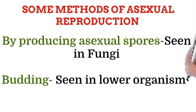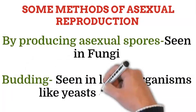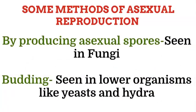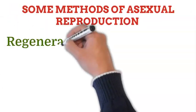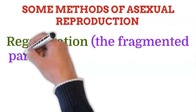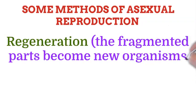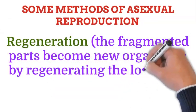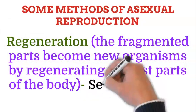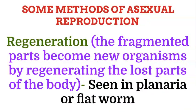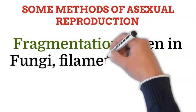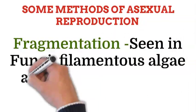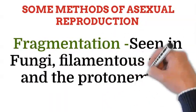Budding is seen in lower organisms like yeast and hydra. Regeneration is a method in which fragmented parts become new organisms by regenerating the lost parts of the body; this is seen in planaria or flatworm. Fragmentation is a method of asexual reproduction seen in fungi, filamentous algae, and the protonema of mosses.